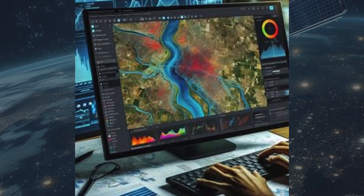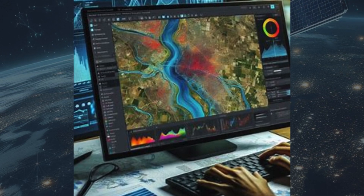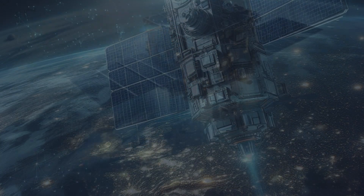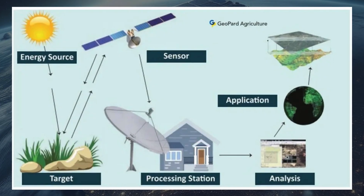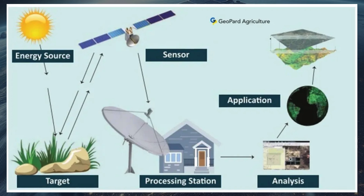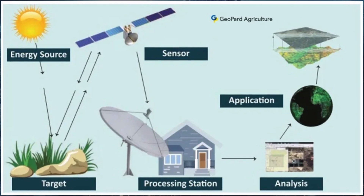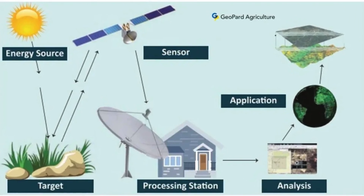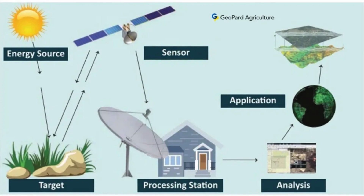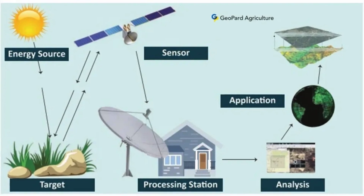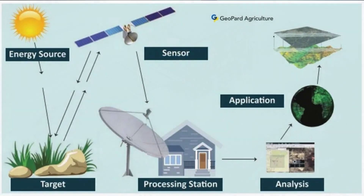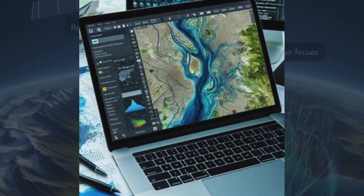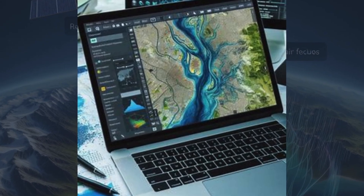Farmers are able to keep an eye on their crops in real-time using satellite photography and ground sensors. With less waste and a smaller negative influence on the environment, they may use this to apply water, fertilizer, and pesticides precisely where and when they are needed.